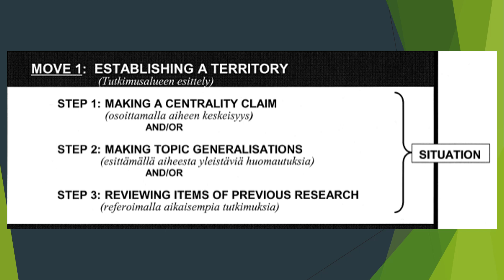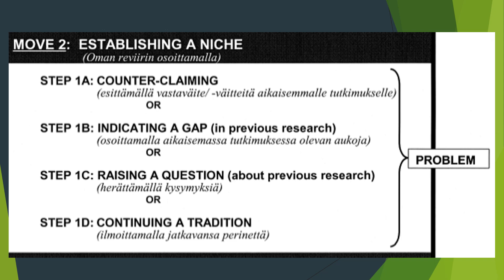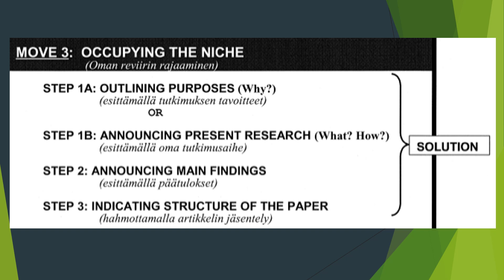In summary: Move 1, Establishing a Territory, pertains to the situation — you explain the situation you have observed. The steps are making a centrality claim, making topic generalizations, and reviewing items of previous research. Move 2, Establishing a Niche, shows the problem you want to deal with in your research; it includes counterclaiming, indicating a gap, raising a question, and continuing a tradition. Move 3, Occupying the Niche, refers to the solution you want to propose to address the problem indicated in Move 2. Its steps are outlining purposes, announcing present research, announcing main findings, and indicating the structure of the paper.